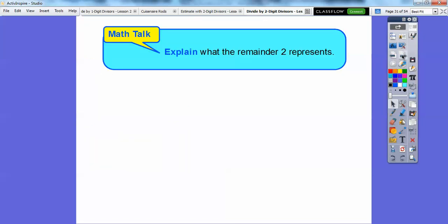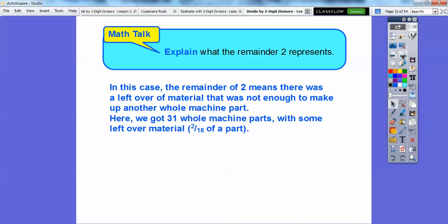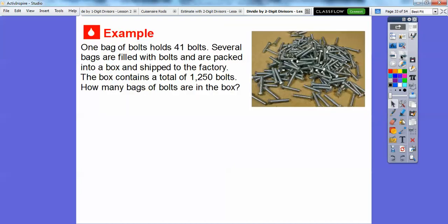Explain what the remainder 2 represents. In this case, the remainder 2 means there was a leftover of material that was not enough to make up another whole machine part. So here we got 31 whole machine parts with some leftover material. The leftover material was 2 of the 18 right there, 2 eighteenths. We'll talk more about this fraction later on this year. It's just leftover material right there.